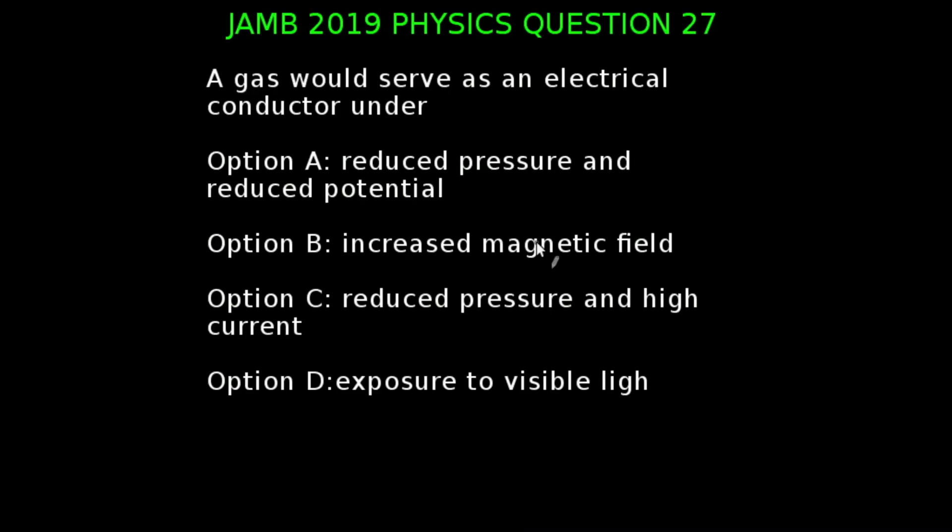You're looking at question 27 of the JAMB 2019 physics examination. A gas would serve as an electrical conductor under... Generally, gases are poor conductors, that is, they don't have free electrons to carry current. But under reduced pressure and high voltage, they can conduct electricity. So the correct answer to this question is option C, which is reduced pressure and high current.